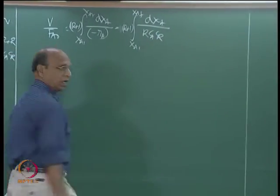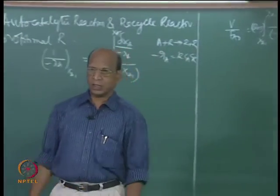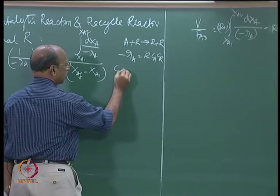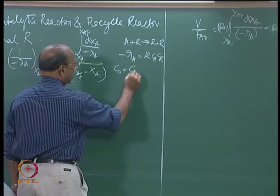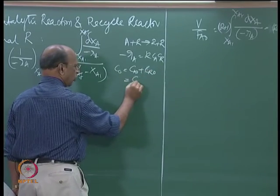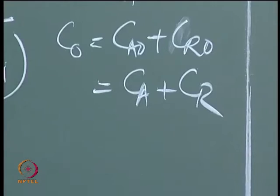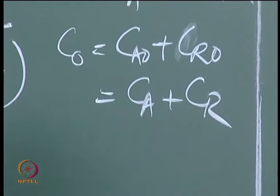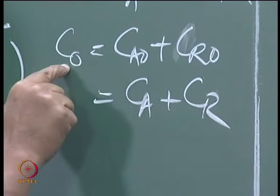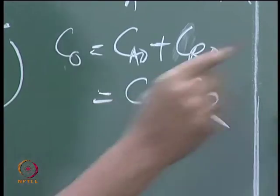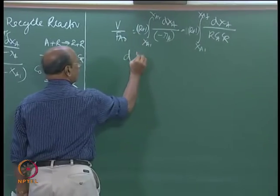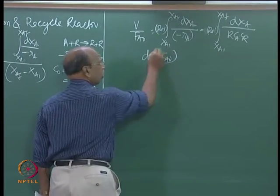You cannot integrate straight away. So you have to write CR in terms of CA. The relationship is total concentration: CAnaught plus CRnaught equals CA plus CR equals Cnaught. So CR equals Cnaught minus CA. Substitute that here, and now you have to optimize V over FAnaught — integrate this expression first.